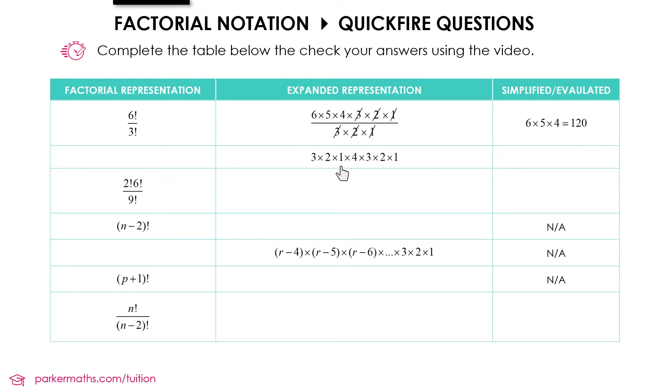Next up we've got 3 times 2 times 1 multiplied by 4 times 3 times 2 times 1. We can think of this as two separate factorials. 3 times 2 times 1 that can be written as 3 factorial. And 4 times 3 times 2 times 1 that's 4 factorial. So we get 3 factorial times 4 factorial. And if you evaluate it you get 144.